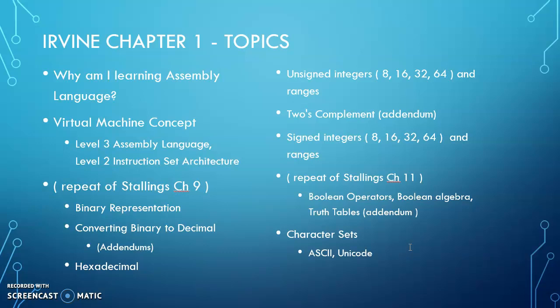The last thing we'll look at are character sets. In assembly, we'll be focusing on ASCII, while in Java we use Unicode. If you have a 16-bit Unicode character, the lower 8 bits are the same as 8-bit ASCII. So the 8-bit representation for a capital A is the same as the lower 8 bits for the capital A in Unicode.